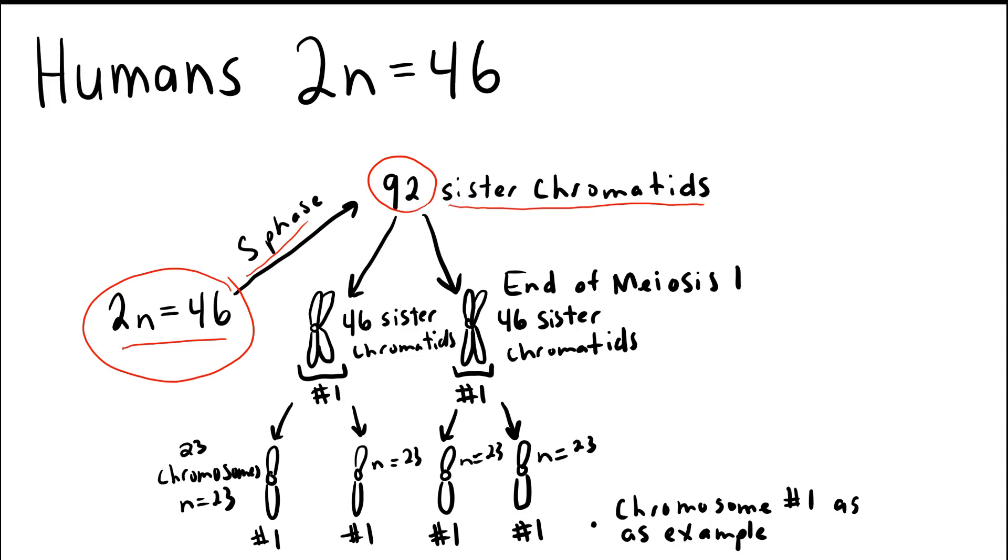The first round of meiosis, now remember there are two rounds, separates the homologous chromosomes. In doing this, it breaks up the tetrad of sister chromatids. So we would have a tetrad here of these duplicated sisters. And meiosis I is going to separate that. So I'm showing that here with the separation of homologous chromosomes.